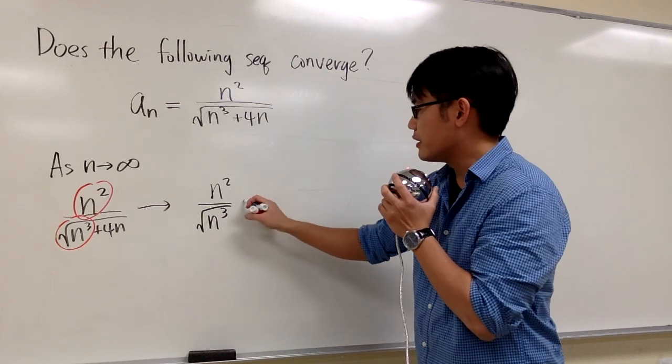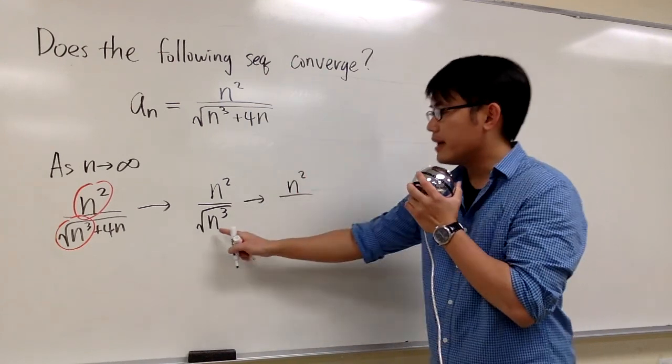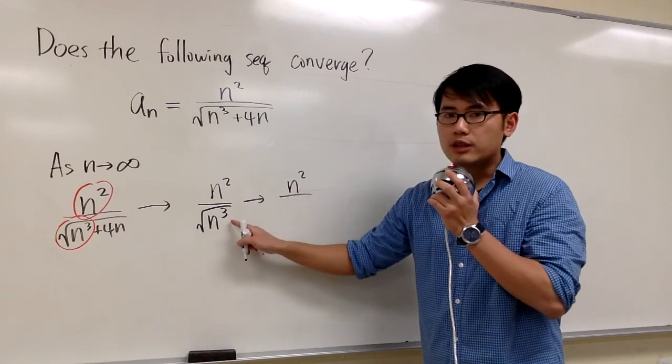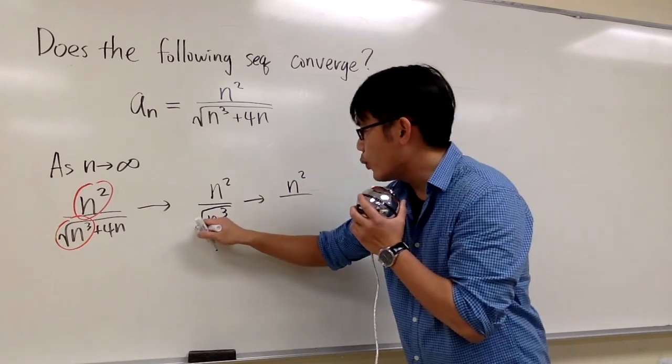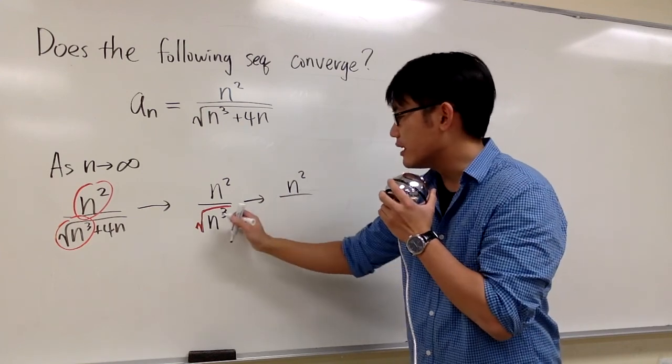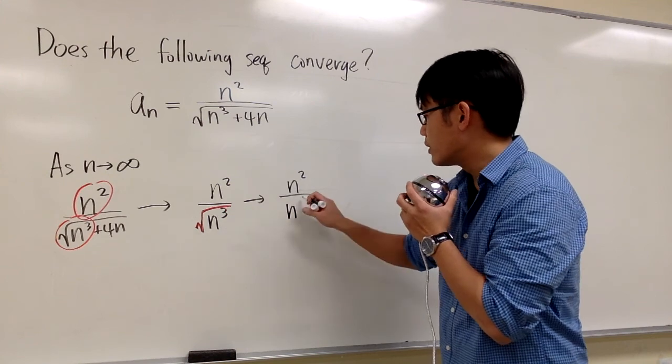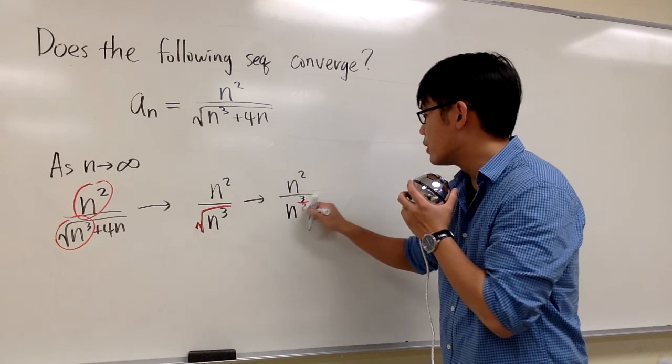Now we can do some algebra. On the numerator, it's just n², nothing changed. But the square root of n³, we can write the square root as the half power. Therefore, we can say the bottom is n^(3/2).